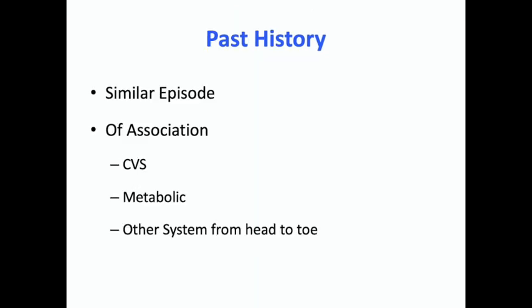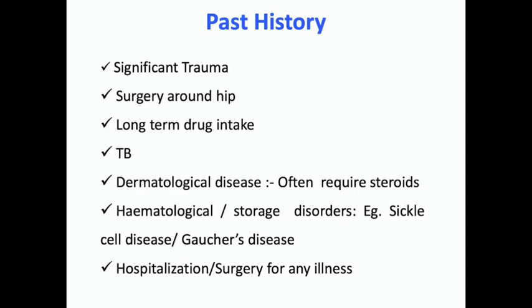Next comes the past history. You want to know about similar episodes of these symptoms in the past, any associations with other systems — CVS, respiratory, abdominal — and look for symptoms from head to toe that might associate with your presenting complaint. You want a past history of trauma, surgery around the hip, long treatment undertaken, any history of tuberculosis, any dermatological disease for which the patient might have taken steroids, any long hospitalization, or any surgery for any illness.